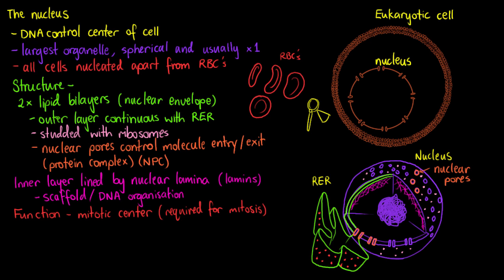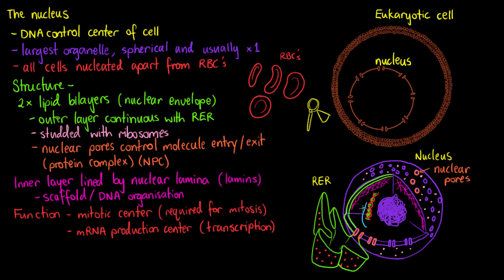The nucleus is also the mRNA production centre of the cell — where we create messenger RNA through a process called transcription. mRNAs are the messengers that go out into your cell to help produce proteins. The DNA within the nucleus, through the process of transcription, creates a messenger RNA. That messenger RNA then leaves the nucleus through the nuclear pores, and in the cytoplasm, with the help of ribosomes, it creates proteins.